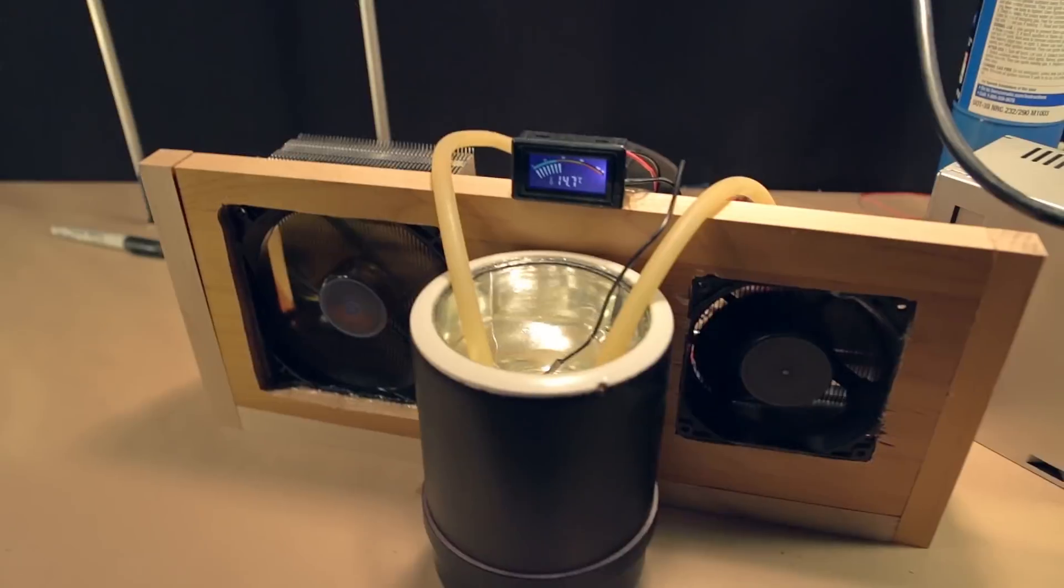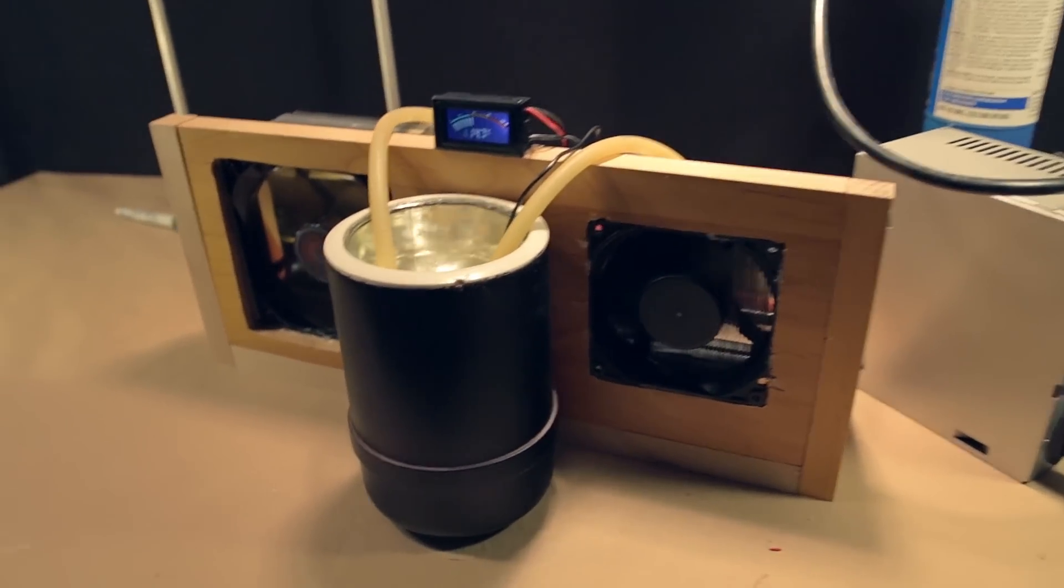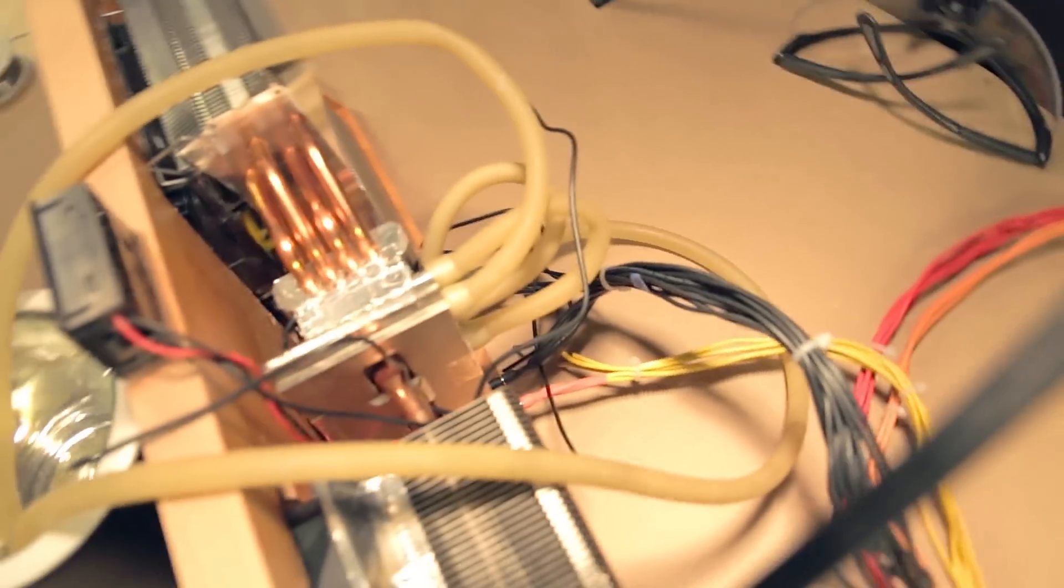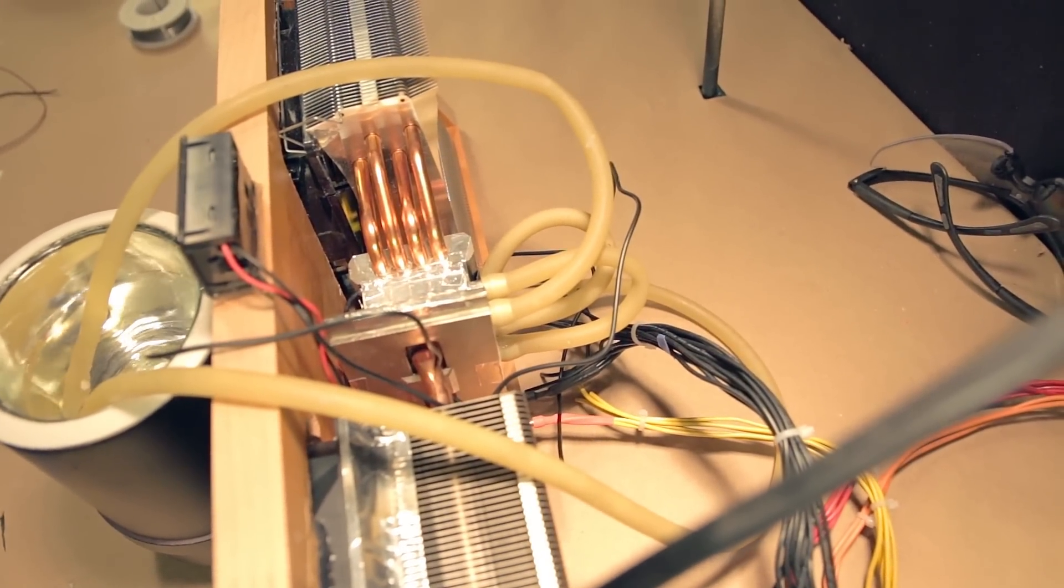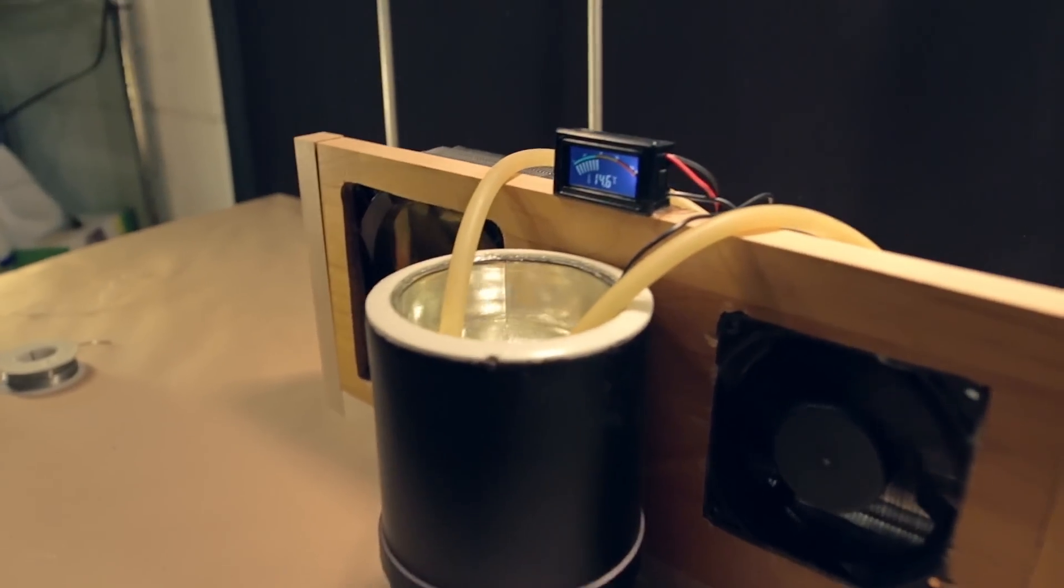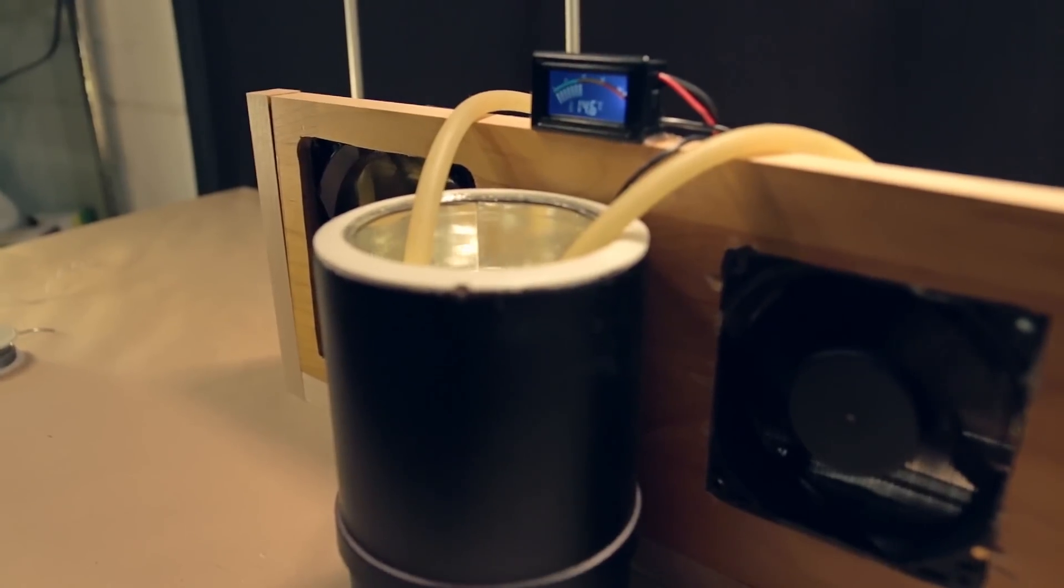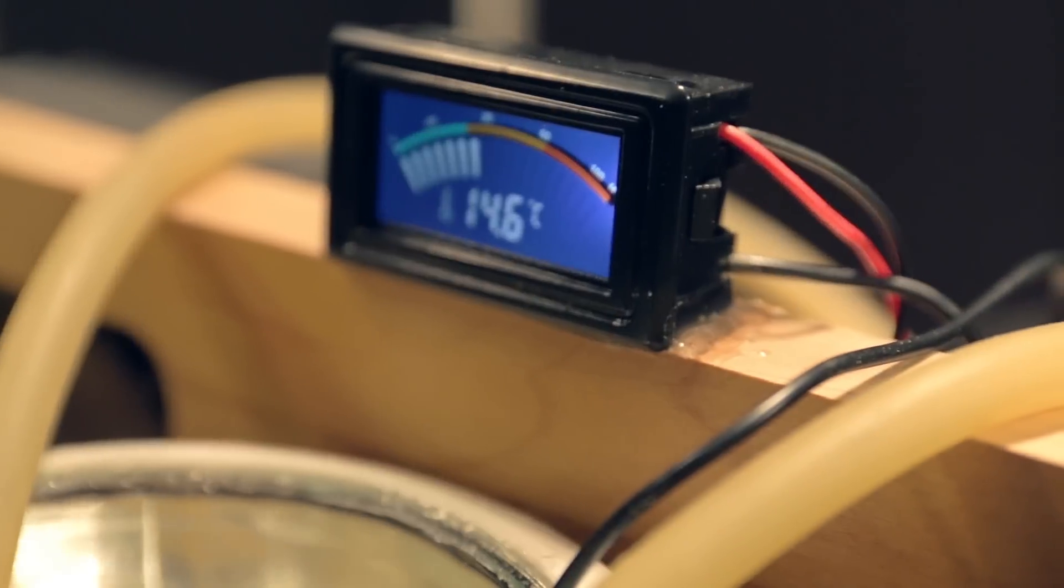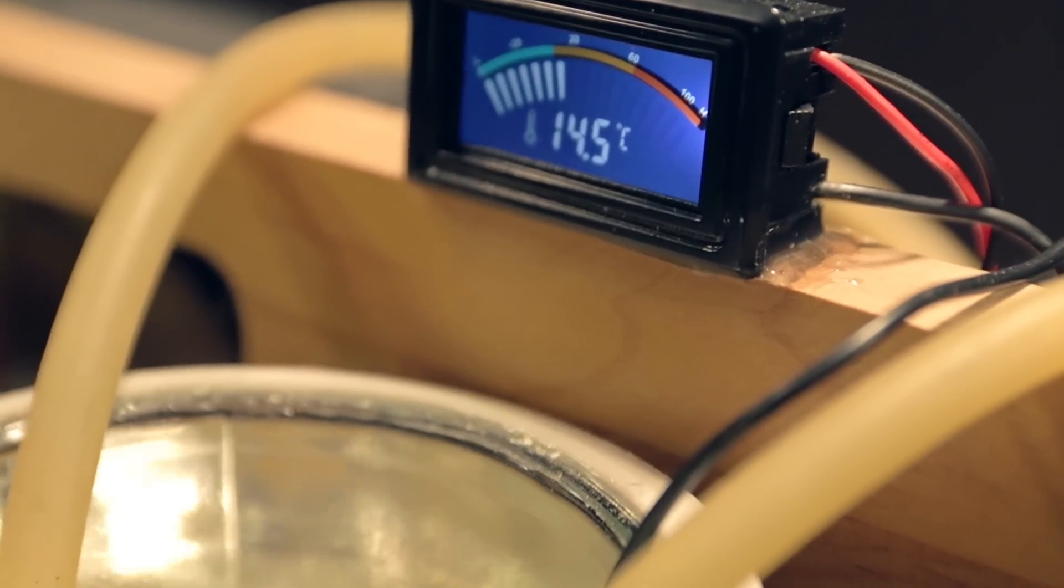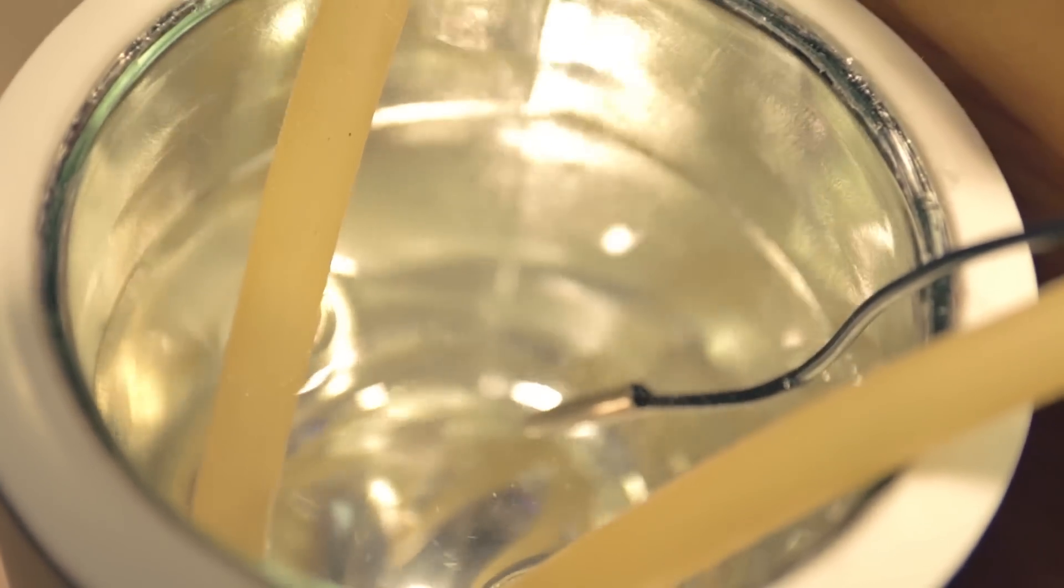This machine runs on 12 volts DC from a computer power supply at around 150 watts. I found the minimum operating temperature for this to be about 6.8 degrees Celsius. So it's perfect for doing long distillations or if you've got a long reaction that needs to be kept cold. This machine is very quiet and it can run for hours on end without stopping.